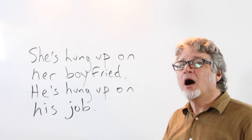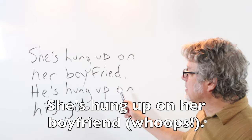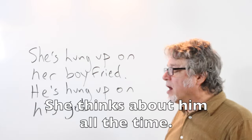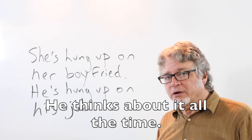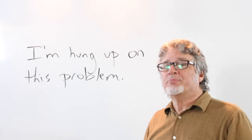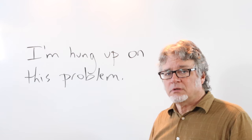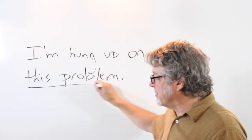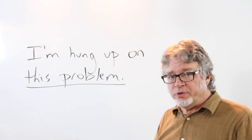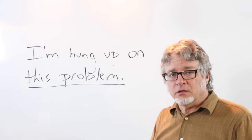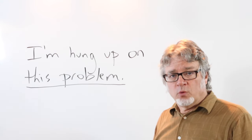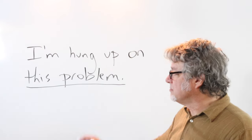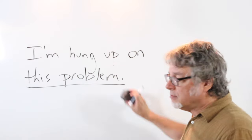When a situation is important to a person, he or she can become hung up on it. For example: 'She's hung up on her boyfriend — she thinks about him all the time.' 'He's hung up on his job — he thinks about it all the time.' People are often hung up on problems: 'I am hung up on this problem.' This could be a math problem, a problem with a machine, your computer, a person, or a relationship.